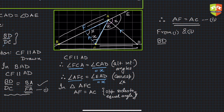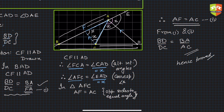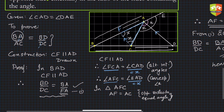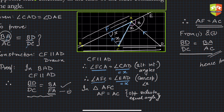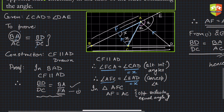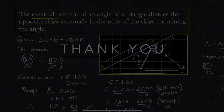From these two results, we can write BD by DC is equal to BA upon AC, which is exactly what we needed to prove. Hence proved. So remember this theorem: if an external angle is bisected, the angle bisector divides the opposite side externally in the ratio of the sides containing the angle. This is the External Angle Bisector Theorem.